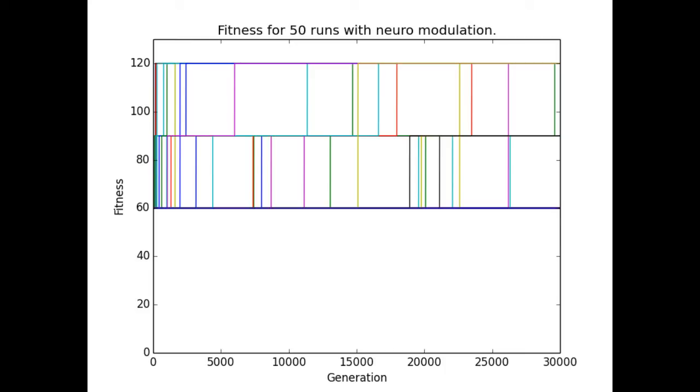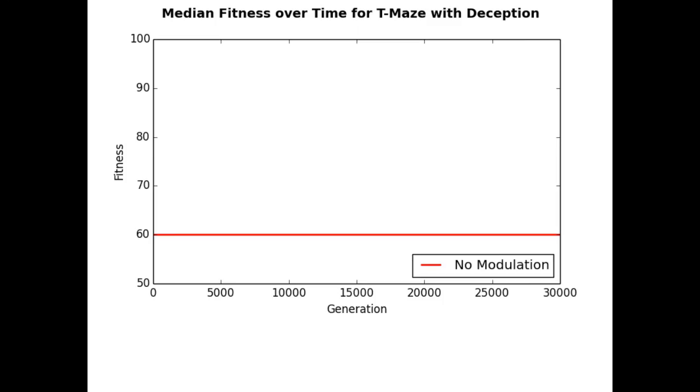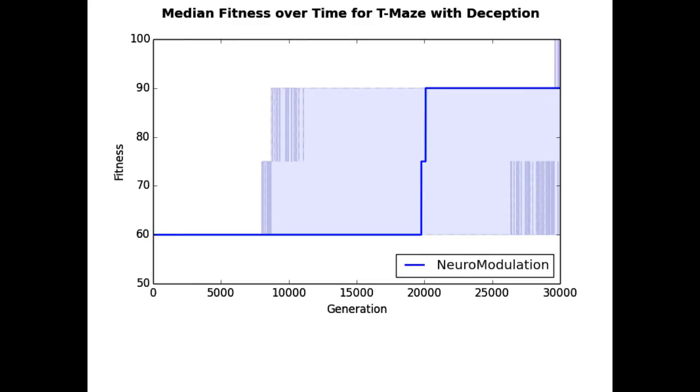With no modulation, we see a local optima center about a fitness of 60. Neuromodulated networks get stuck on this same optima initially, but are eventually able to gain some fitness, though nowhere near the optimal.